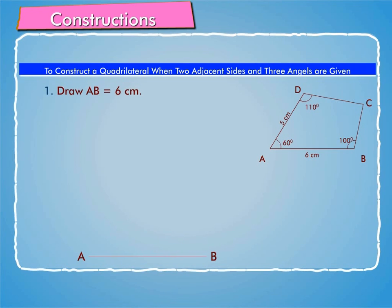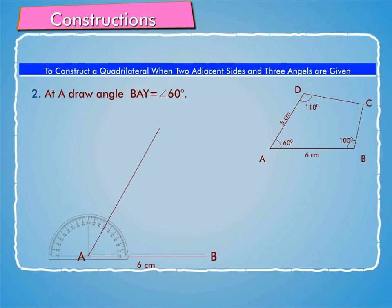Step 1: Draw AB equal to 6 cm. Step 2: At A, draw angle BAY equal to 60 degrees.